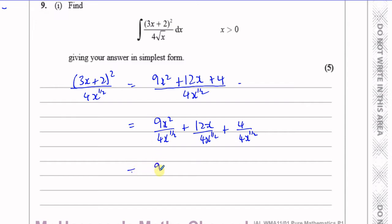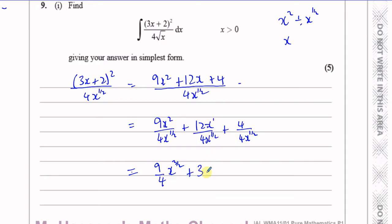9 over 4 doesn't simplify, so that stays as 9 over 4. This is x to the power of 2 divided by x to the power of a half — we subtract the powers — so x to the power of 4/2 minus 1/2 gives x to the power of 3/2. Then 12 divided by 4 is 3, and x to the power of 1 minus a half is x to the power of a half, giving 3x to the power of a half. Finally, 4 divided by 4 is 1, but 1 over x to the power of a half gives x to the power of negative a half.